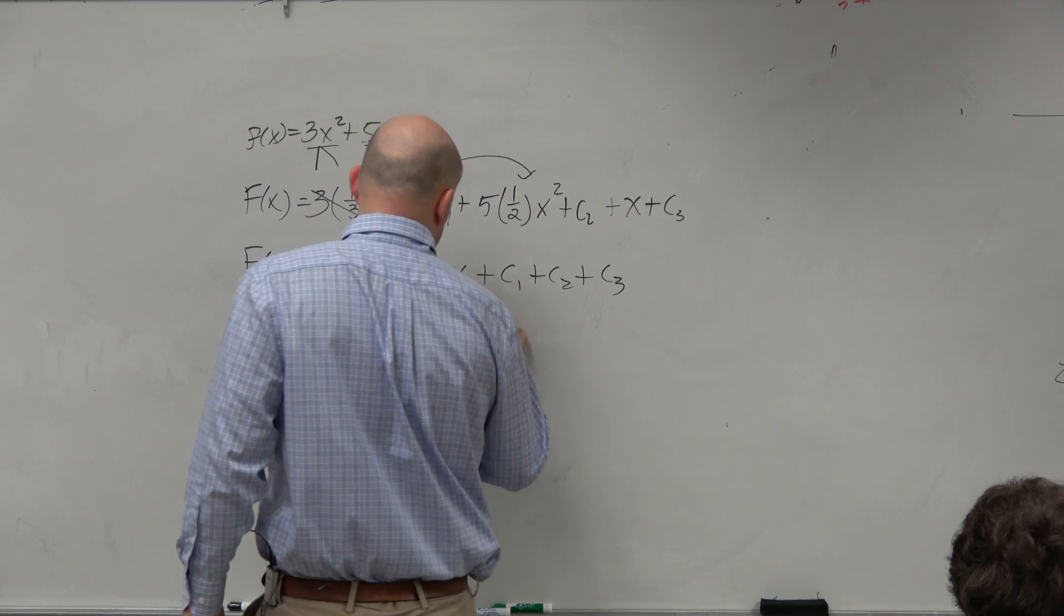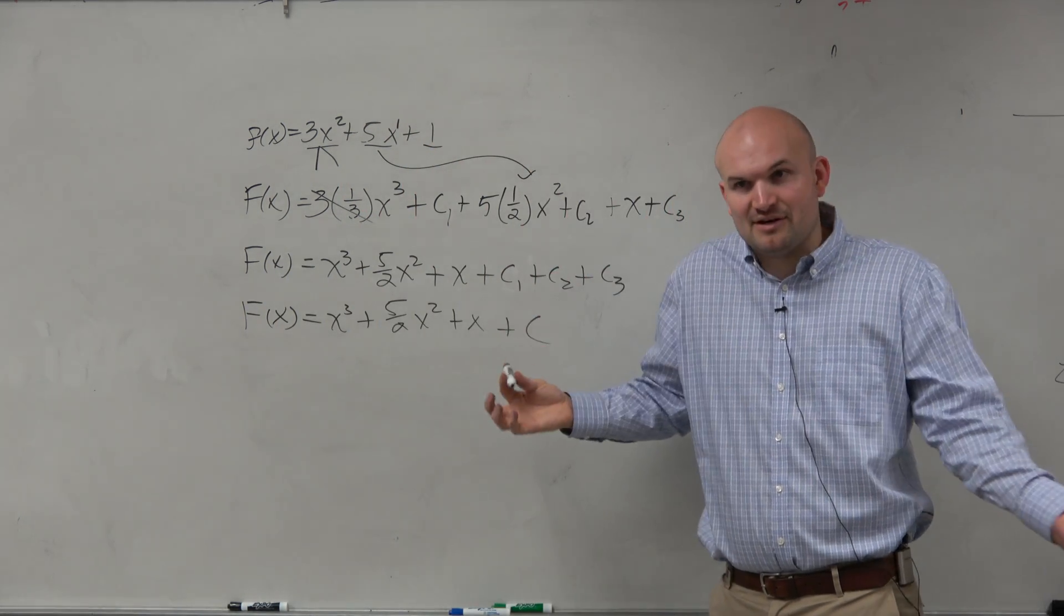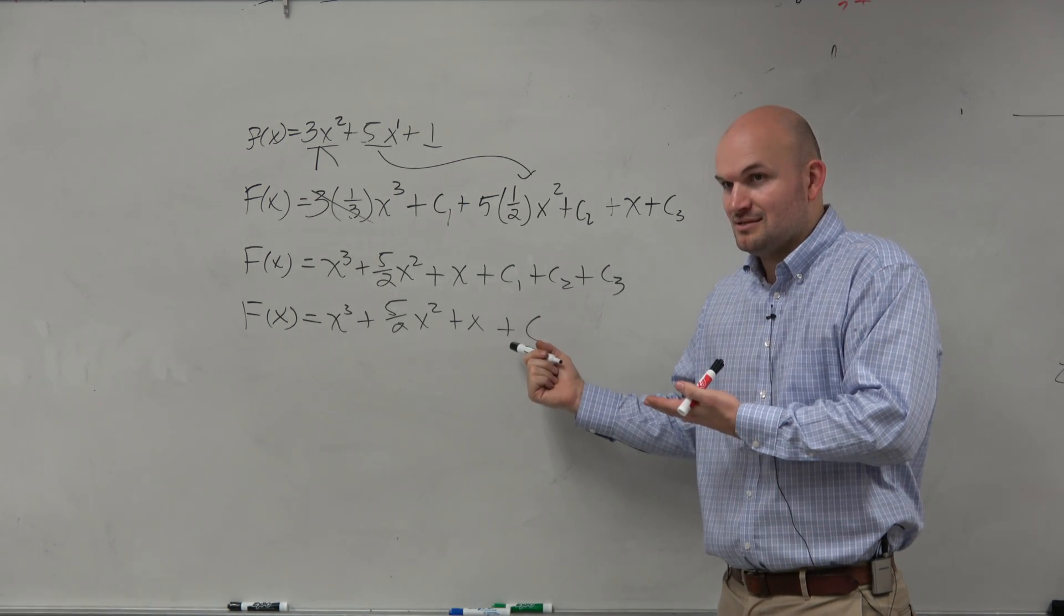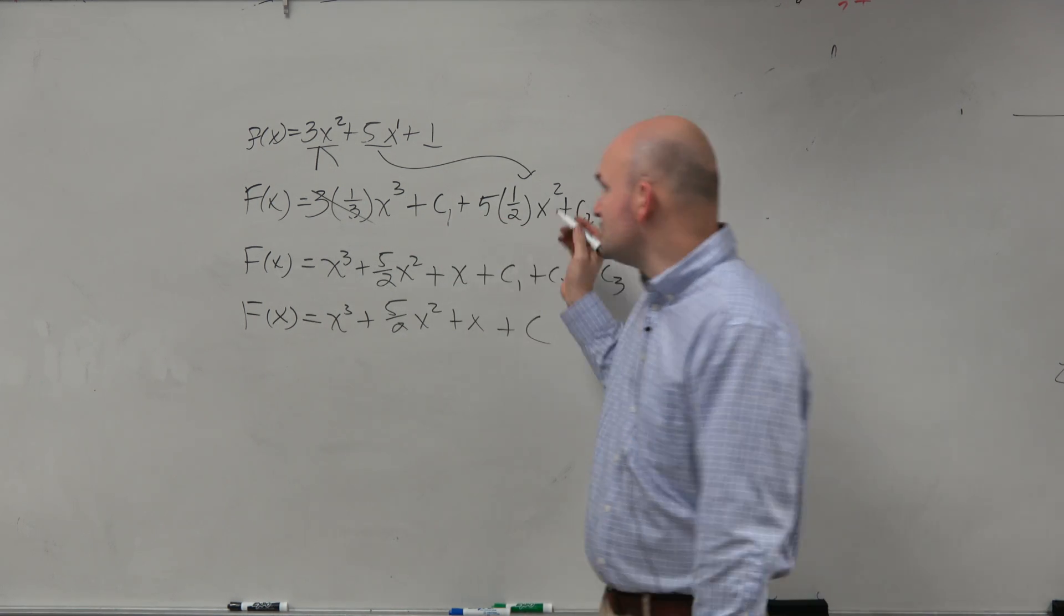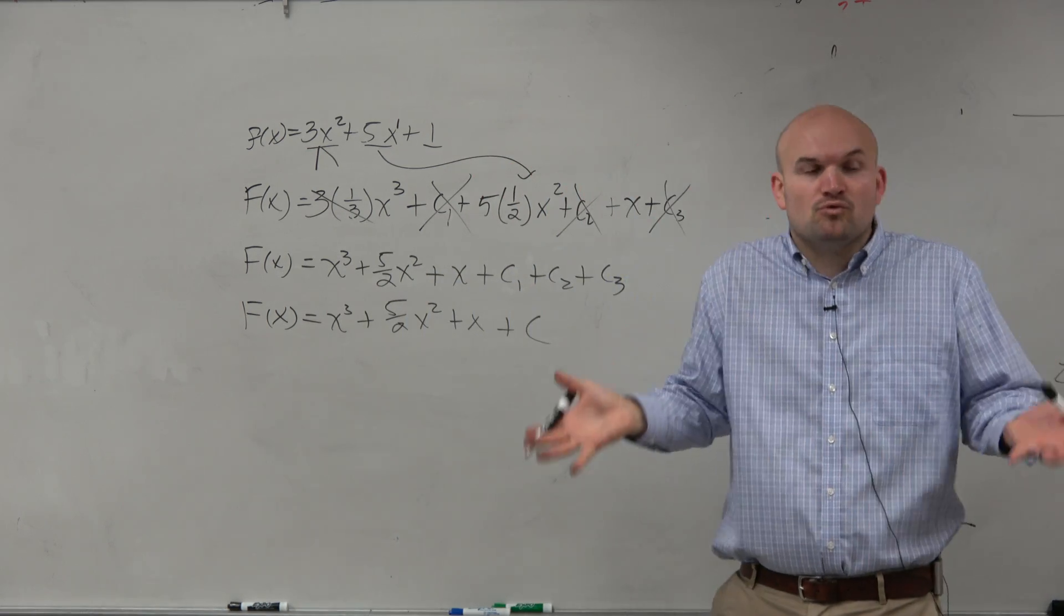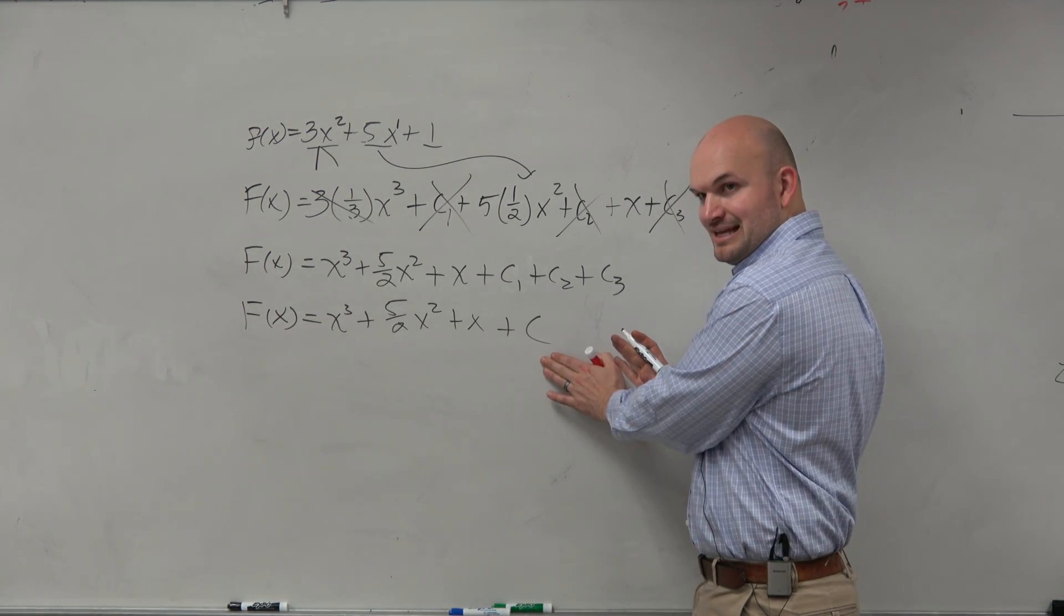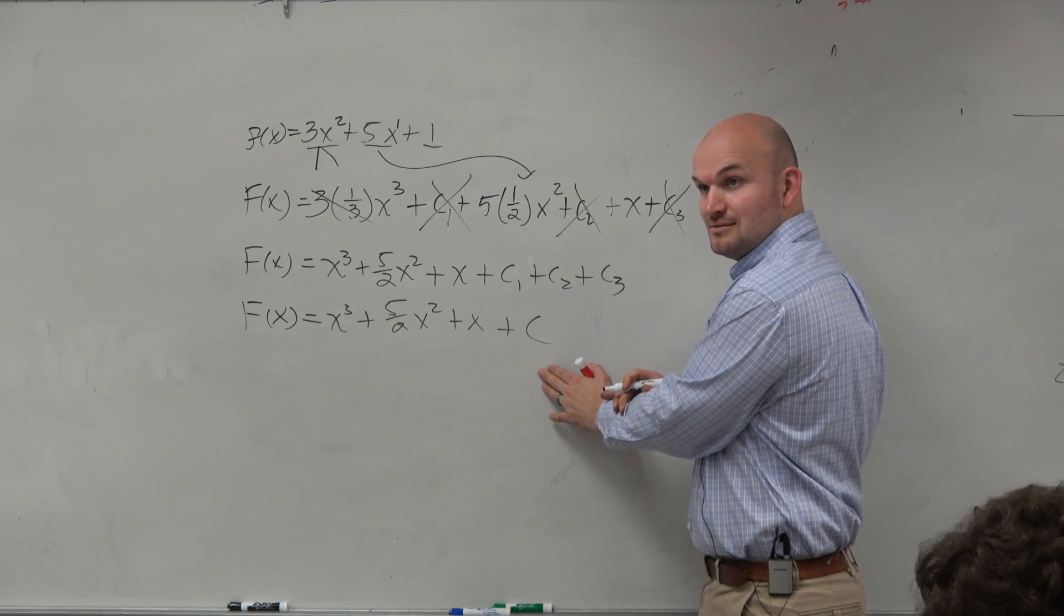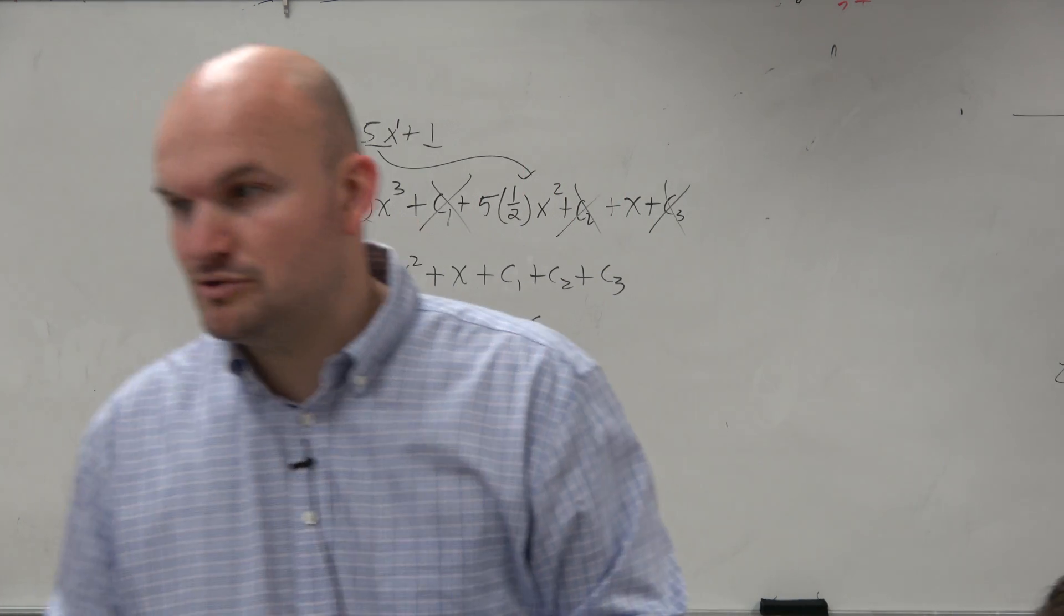So C, big C, just represents whatever all of these three are added up together. It doesn't really matter what their values are or how you want to do it, but it's just going to be the three c's, right? So you don't need to, what I'm trying to tell you is you don't need to do this. It's not mathematically wrong if you're doing it, you just don't need to do it. You can just add your c at the end. Just don't forget to add your c at the end. Make sense? OK? So don't need to do different c's for each integration. Just do it once.